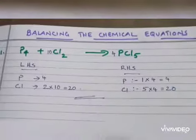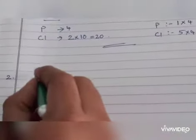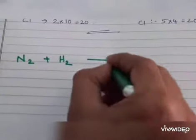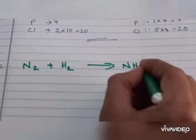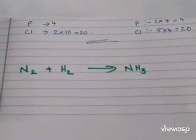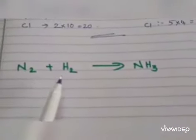Now we can do another sum: N2 plus H2 gives NH3. NH3 is ammonia. You can pause the video and you can write the equation in your notebook and just try it out.